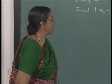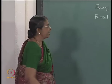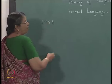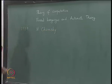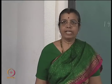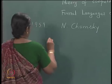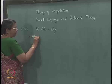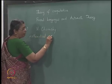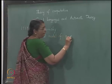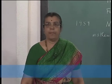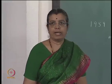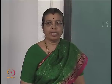This subject — formal languages and automata theory, or theory of computation — started in the year 1959 with the formal definition given by Noam Chomsky. He tried to define what is a grammar, what is a mathematical model of a grammar. The motivation was to study parsing in natural languages like English, so he tried to look at parse trees of natural language sentences and define what a grammar is.